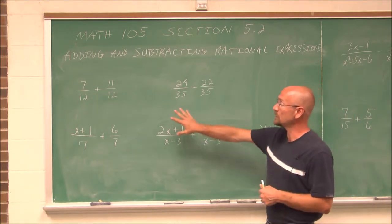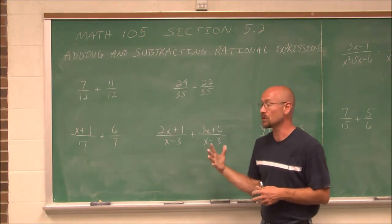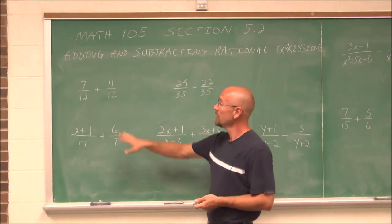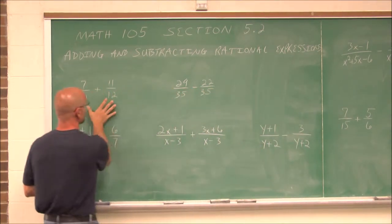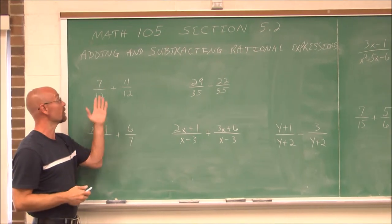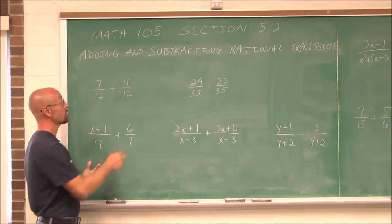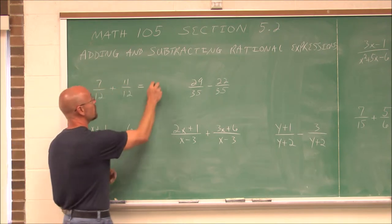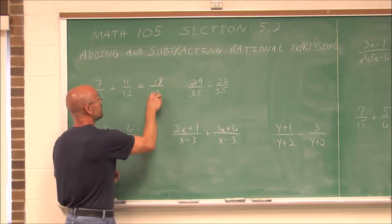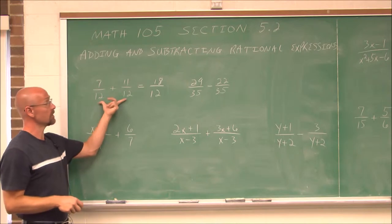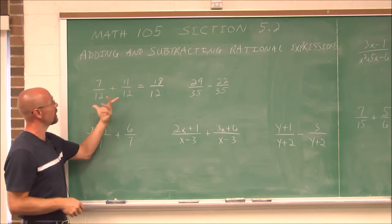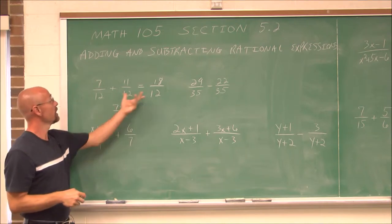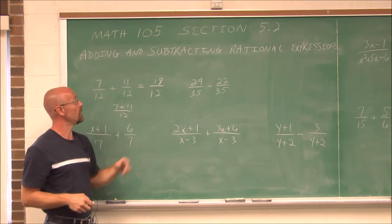The first thing we want to recall is adding or subtracting fractions that have a common denominator — a like denominator. Essentially, if their denominators are the same, we can just add their numerators and their denominators don't change. 7 plus 11 would be 18, and both of these have a denominator of 12. We get 18 over 12.